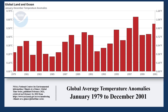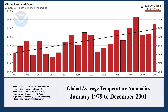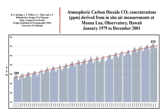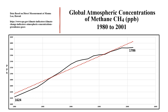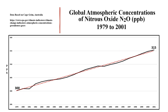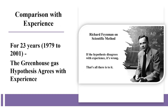The 23-year period from 1979 to 2001 has a positive global temperature trend of plus 0.13 degrees Celsius per decade. Carbon dioxide concentration increased by 35 parts per million, methane concentration increased by 62 parts per billion, and nitrous oxide concentration increased by 15 parts per billion. For these 23 years, the greenhouse gas hypothesis agrees with experience.